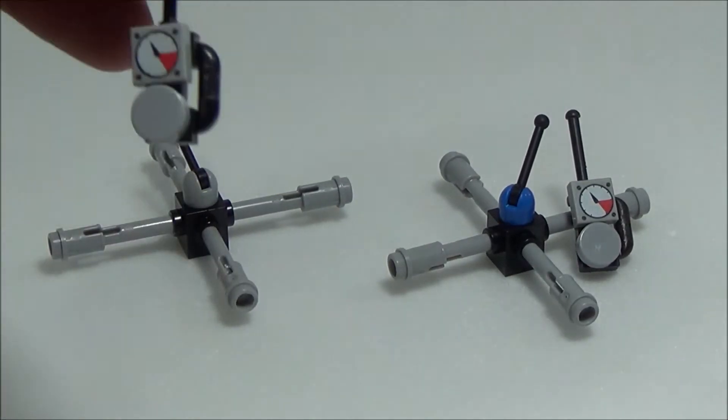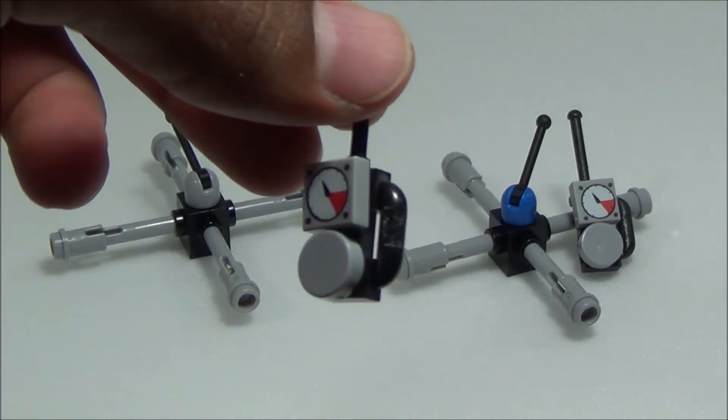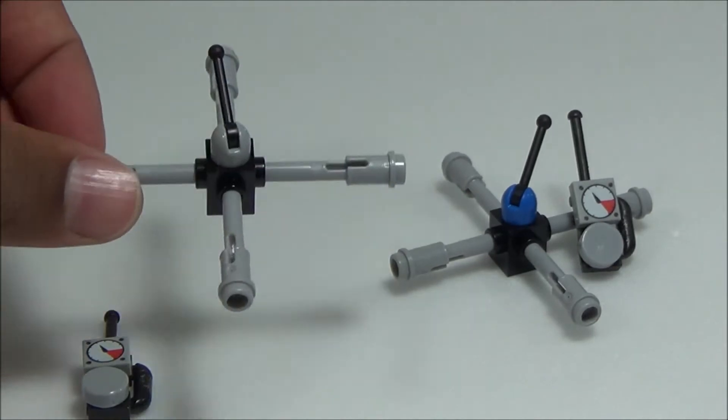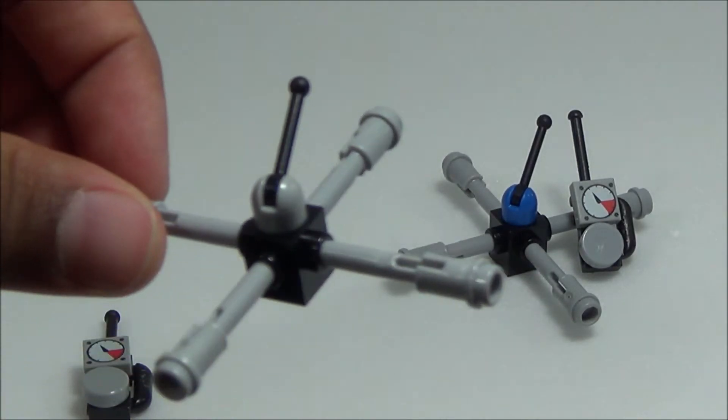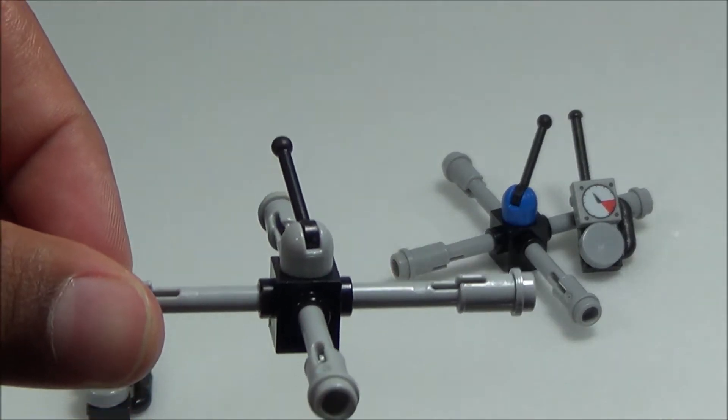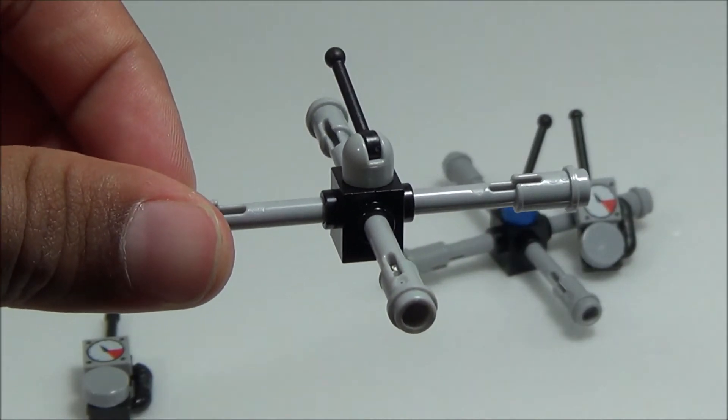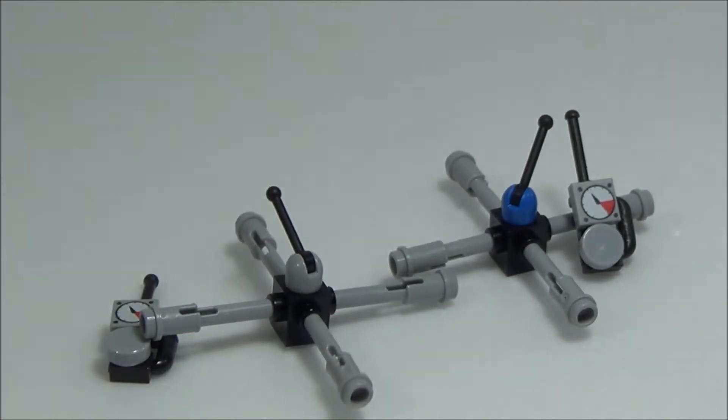These are the quadcopters. As you can see, we built a remote that's really nice, just made out of three pieces, and then we made the quadcopter simple but nice. Later in this video we're going to show you how to add camera add-ons, so stick around for that. Let's see how to build it.